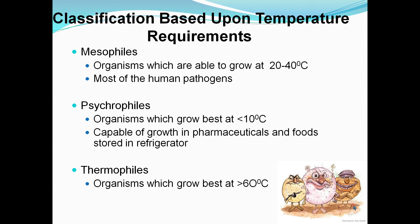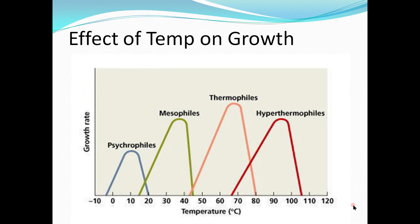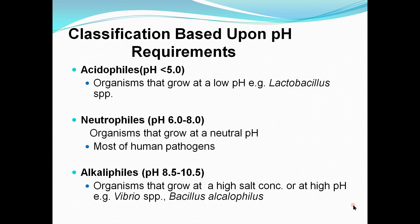Thermophils best grow in hot temperatures of about 50 to 80 degrees Celsius (122 to 176 degrees Fahrenheit) and can be found in hot springs and geothermal soils. Bacteria that favor extremely hot temperatures are known as hyperthermophiles. In this graph you can see the effect of temperature on bacterial growth rate, showing psychrophils, mesophils, thermophils, and hyperthermophiles.